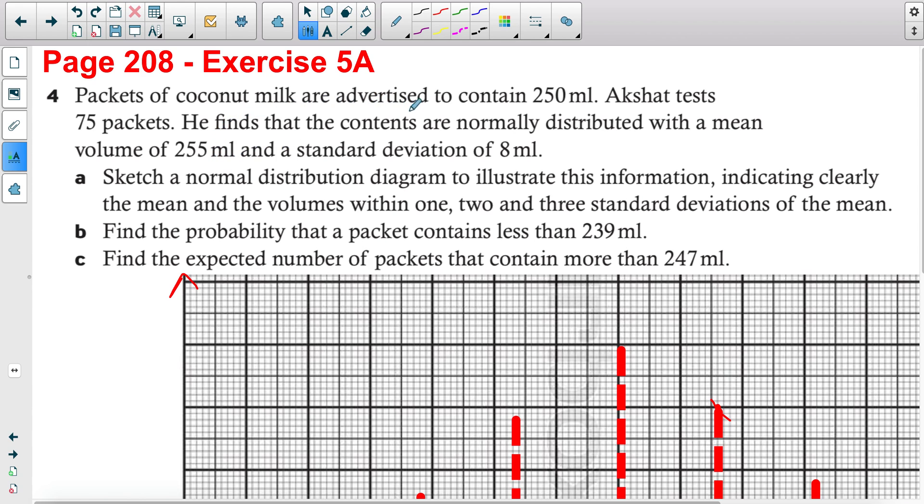We have a packet of coconut milk advertised to contain 250 ml. Akshat tests 75 packets, and the contents are normally distributed. This is the first hint that you need to use normal distribution. We have a mean of 255 ml and a standard deviation of 8 ml. So always write these values: mean is 255 and standard deviation is 8 ml.